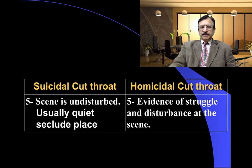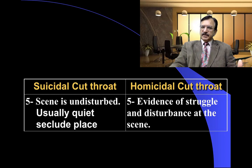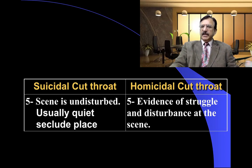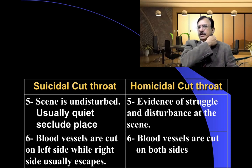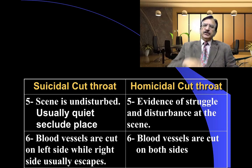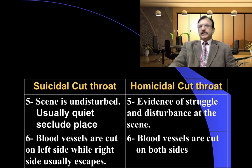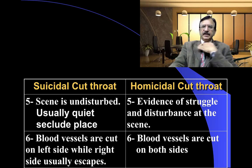In suicidal cutthroat the scene is usually undisturbed and quiet, whereas in homicidal, signs of struggle, scuffle, and disturbance at the scene of crime are usually observed. In suicidal cutthroat, blood vessels are cut on the left side while the right side usually escapes — if the person is right-handed, vessels are cut on the opposite, i.e., left side. But in homicidal cutthroat, as it is horizontally placed extending to both sides of the neck, usually both sides of the vessels are cut.